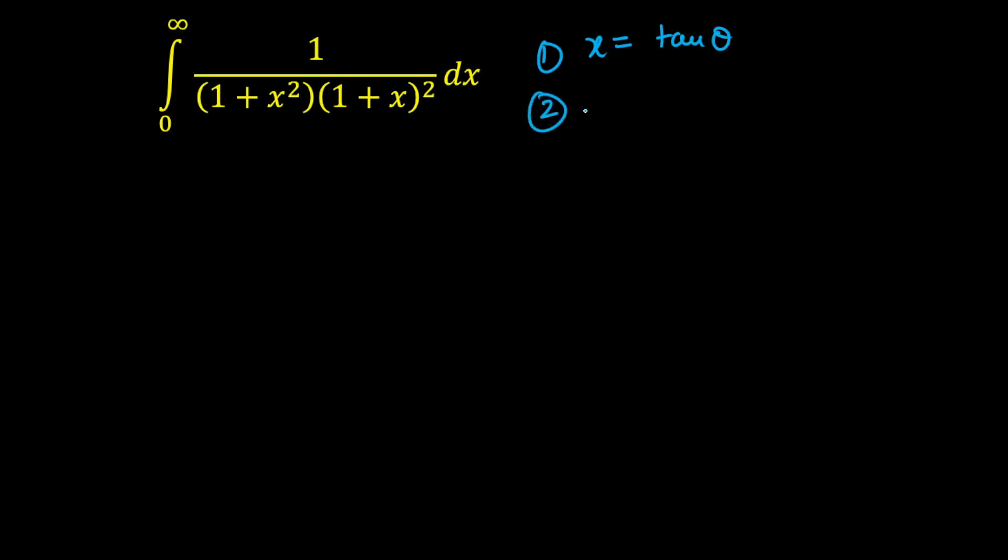The second thing which I prefer is whenever the limit is given from 0 to infinity, always remember students, you are going to take x equals 1 by t. This is preferable from my side and I am going to show you why this is easy. So differential will be dx is minus 1 upon t square dt.